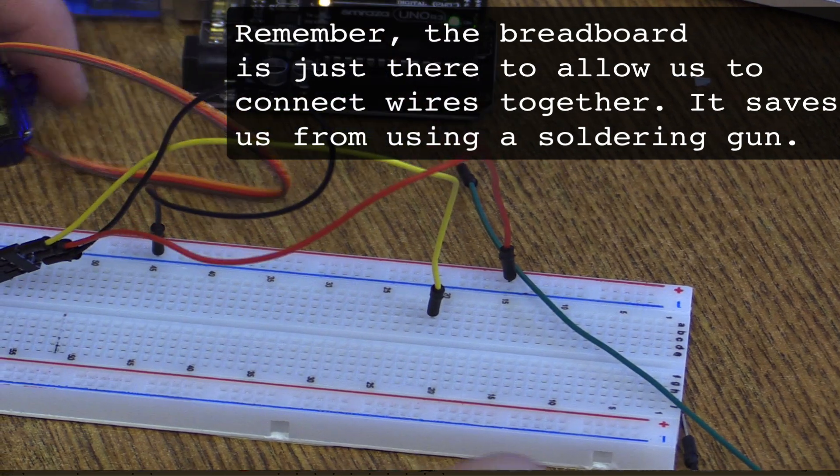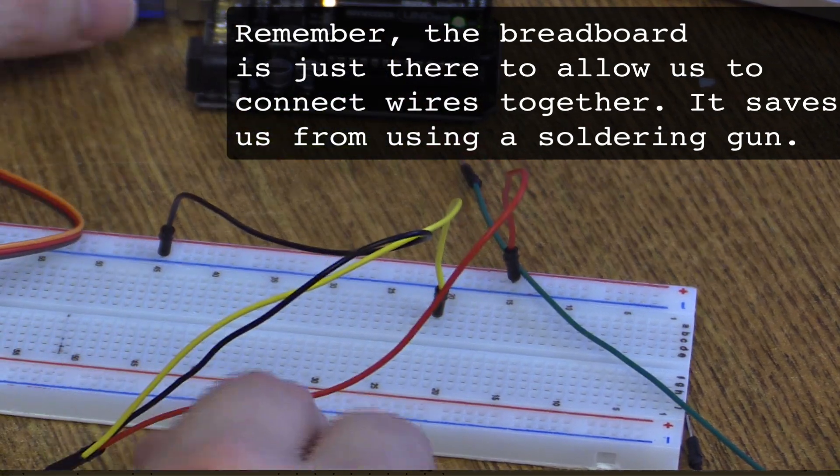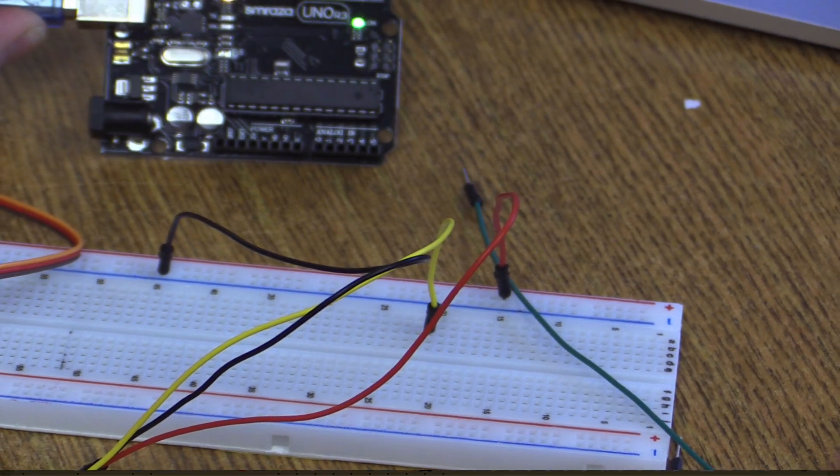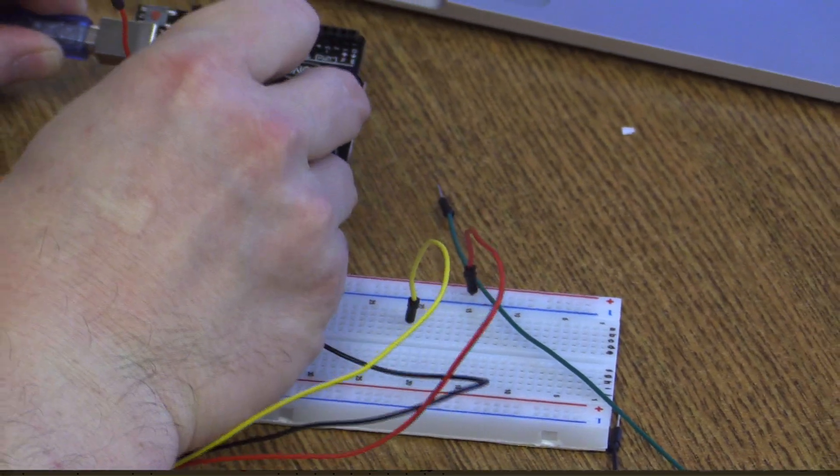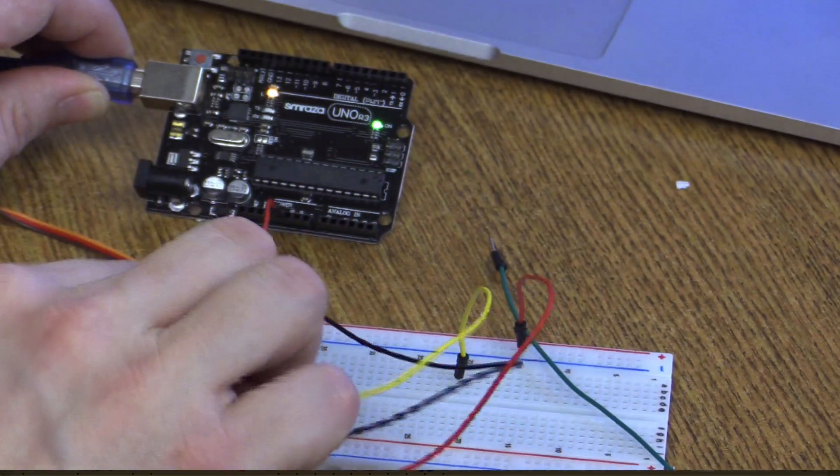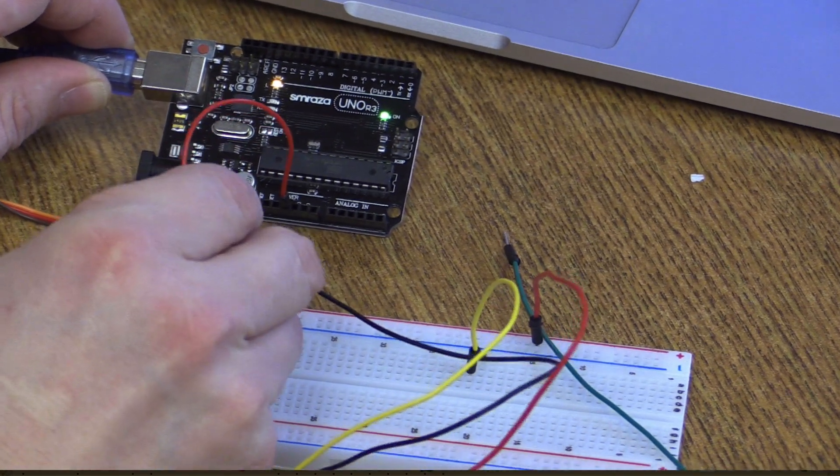Now we're going to go ahead and connect our servo to the Arduino. So again, as we've done all over again every time, we go to 5V, plug that in to the plus section on the board.